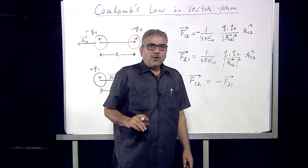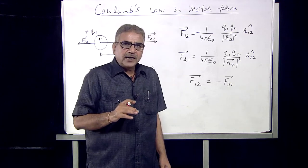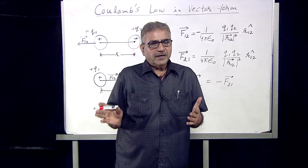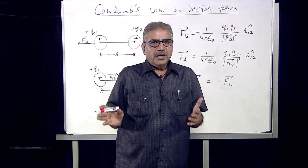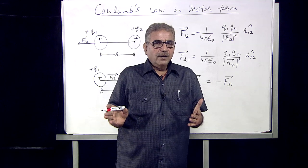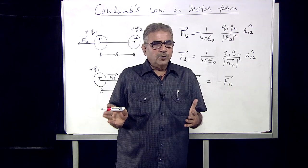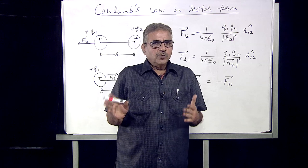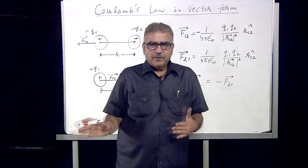So now we have clearly understood how Coulomb's law can be explained in the vector form, and we have found that the force on charge one due to charge two is equal and opposite to the force on charge two due to charge one. Today we have understood what Coulomb's law is and how it can be represented in the vector form. Thank you.